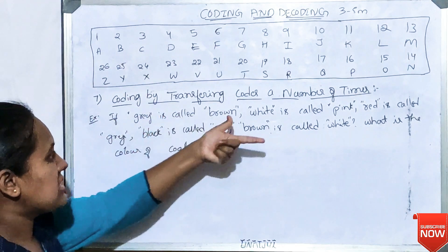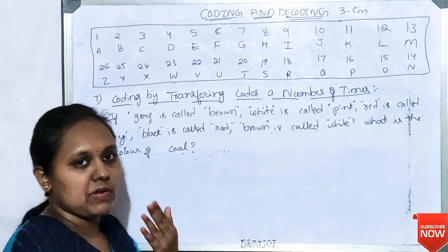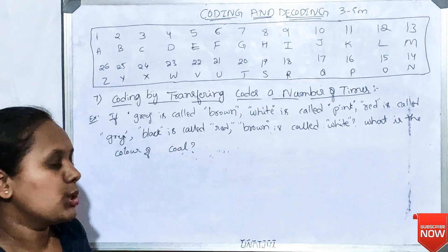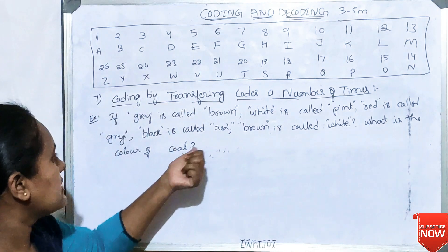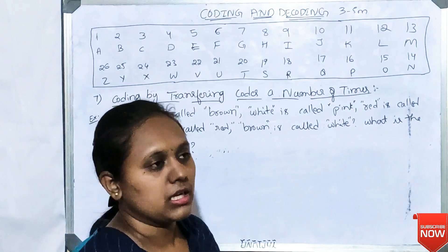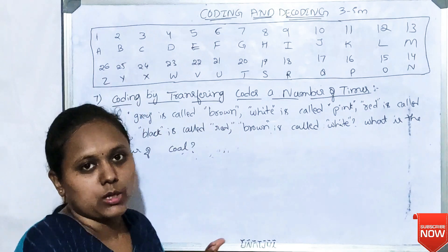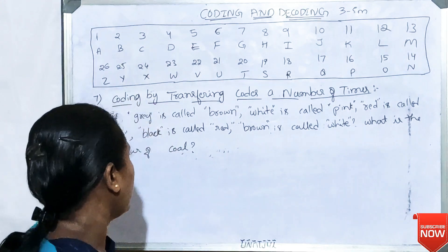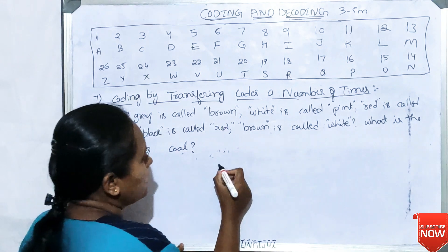This type of pattern is coding by transferring codes using colors or number of times. For example: what is the color coded as? Black is called red. So if you are asked what color is coded as black, the answer is red.